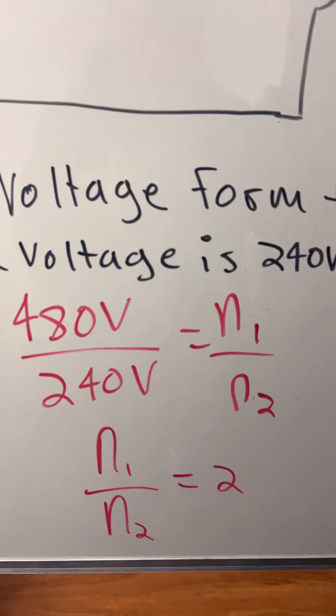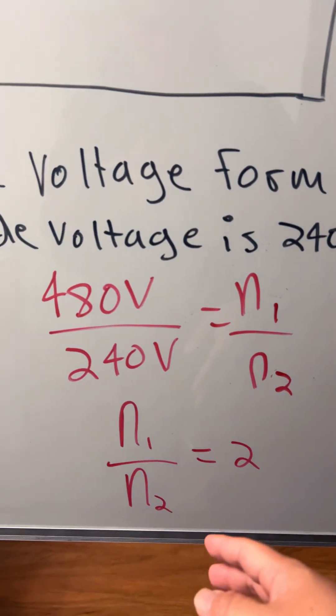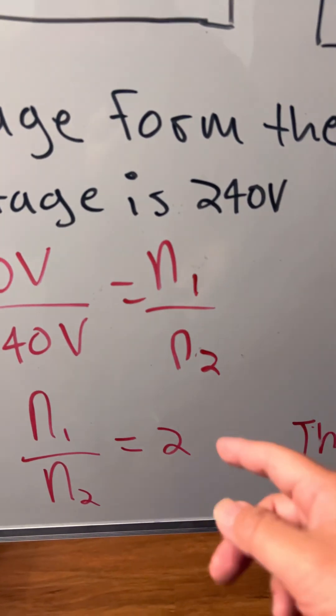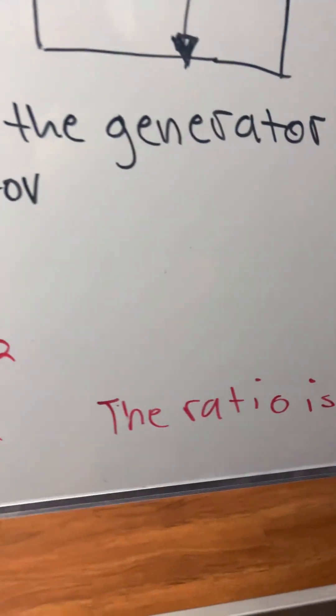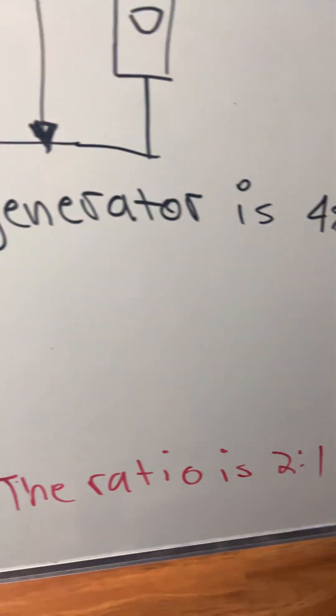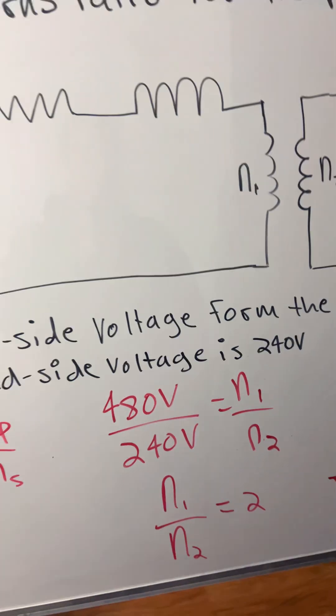That will give us N1 over N2 equals 2. So the ratio is 2 to 1 for this potential transformer.